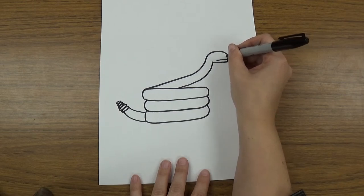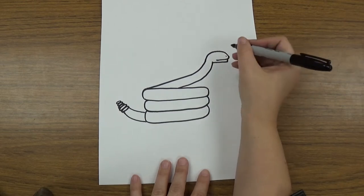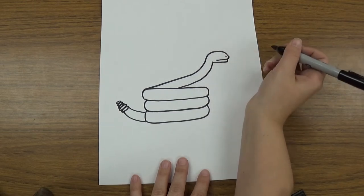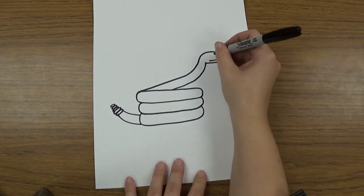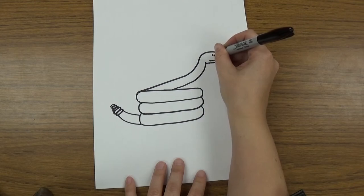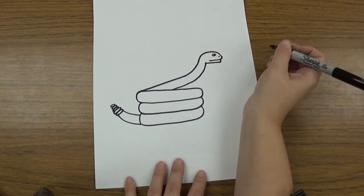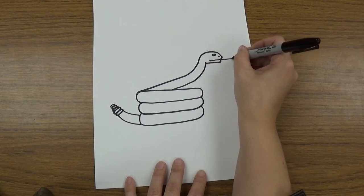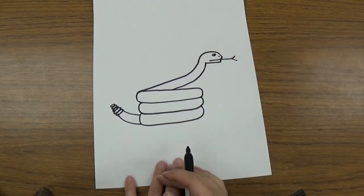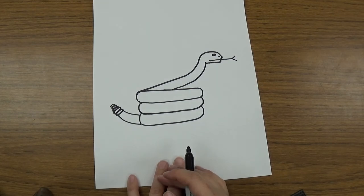The next thing you're gonna do is add just a dot just like that. So a little circle dot. And that's the nostril, the nose that it breathes out of. And you can draw an eye on your snake. And you can draw a tongue sticking out. And then you have your rattlesnake.